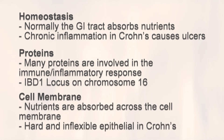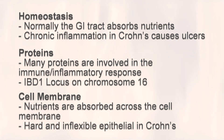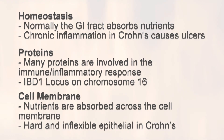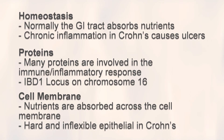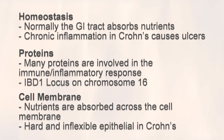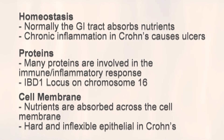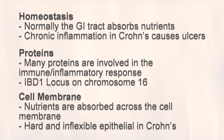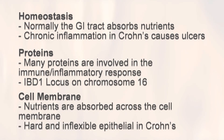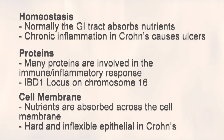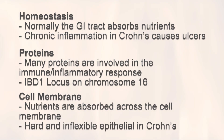Cell membrane. The cell membrane of a healthy intestine is flexible and free of damage. Nutrients are usually absorbed through the cell membrane from the intestines to the blood and lymph. However, in Crohn's, the epithelial tissue becomes hardened and inflexible, not allowing nutrients to pass through.